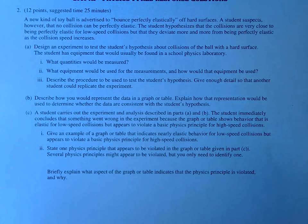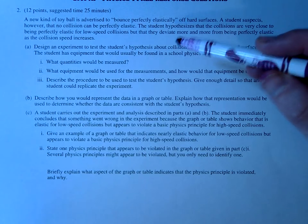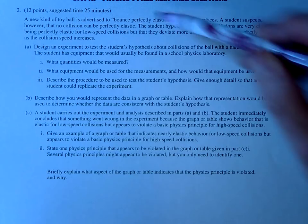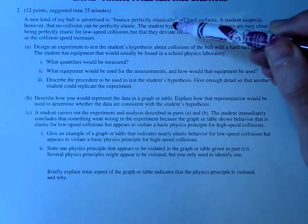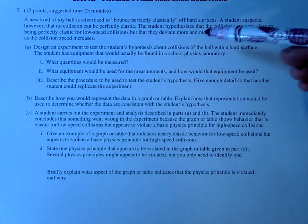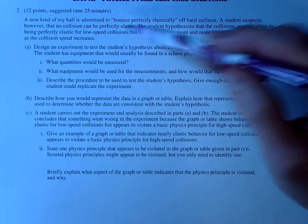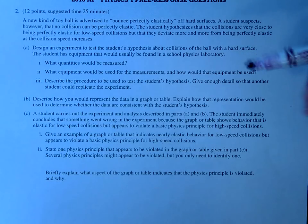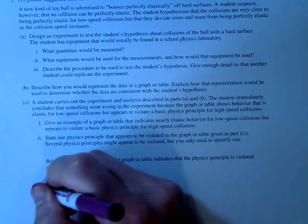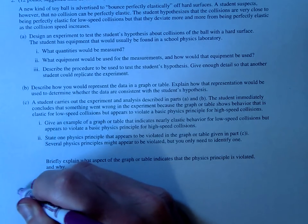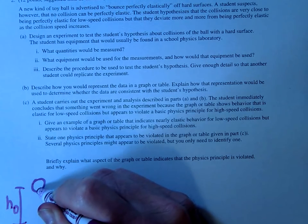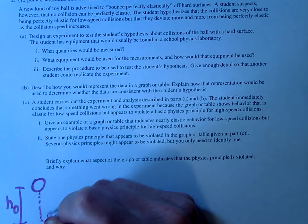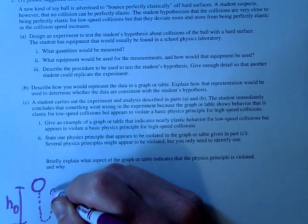And then hopefully you can extrapolate and see if you did it properly. So basically, they want to somehow prove that it's elastic for low speeds and inelastic for high speeds. So the most straightforward way I think you would do this is basically just drop a ball from different heights, see what happens when it bounces, it's going to bounce back up.